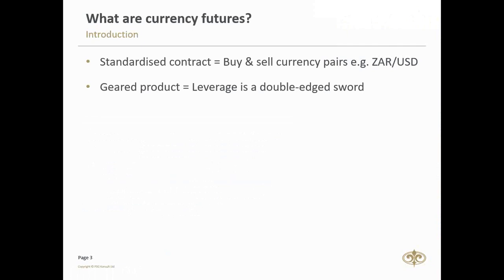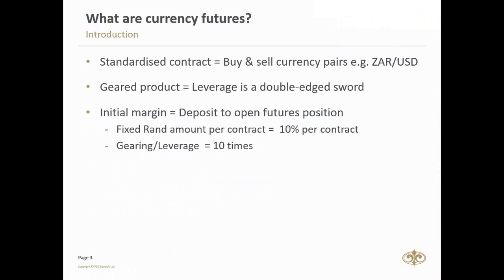It's important to understand this is a geared product. Leverage is a double-edged sword: leveraged positions can lead to large gains if the exchange rate moves as anticipated in your favor, but conversely will cause large losses if the exchange rate moves in the opposite direction. So there is risk involved — it's not for everybody. To understand how gearing works: you put down an initial deposit, roughly 10% of the contract value, to open a futures position. If you're putting down 10% to get 100% exposure, your gearing is 10 times — so a 1% movement in the underlying currency can result in a 10 times movement on the currency future.